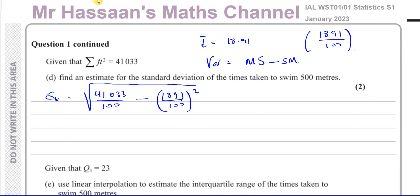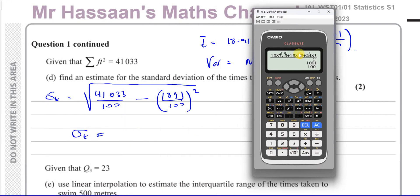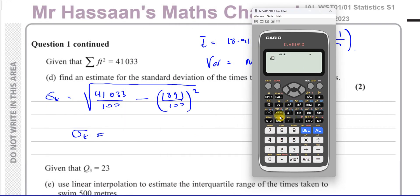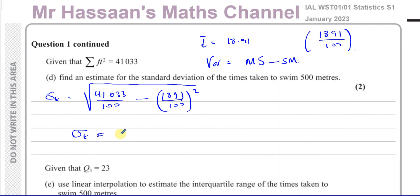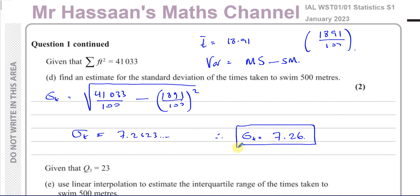So sigma_t equals the square root of (41033/100) minus (1891/100)². Putting that into the calculator gives us 7.2623, so the standard deviation is 7.26 minutes to 3 significant figures. That's the answer for Part D.